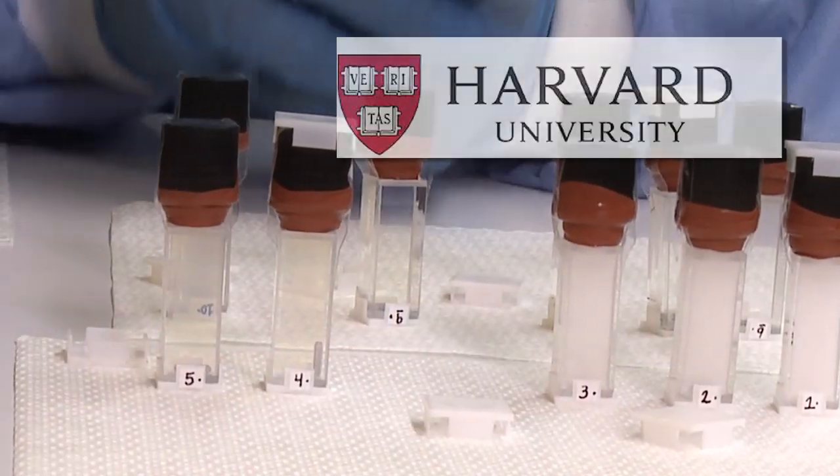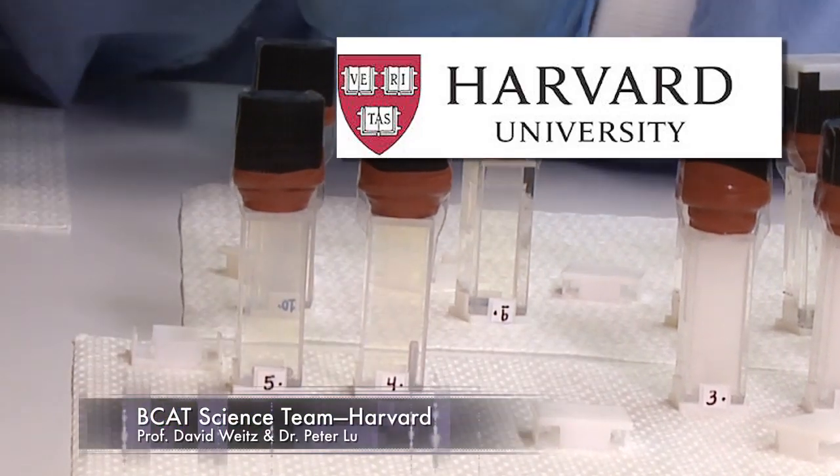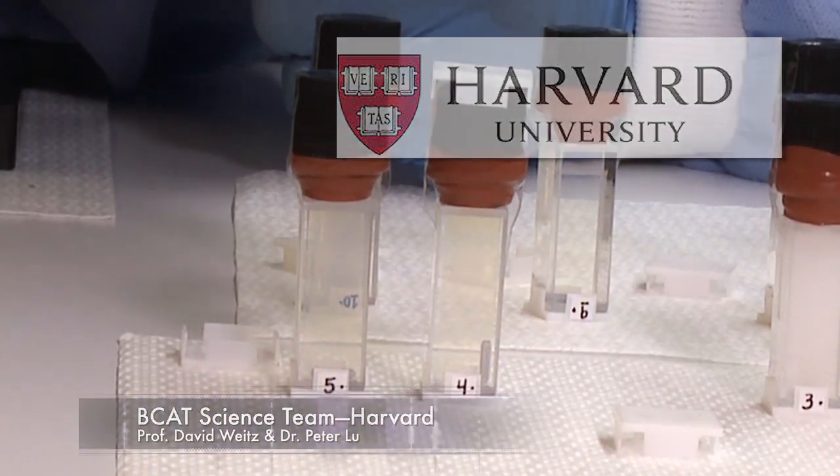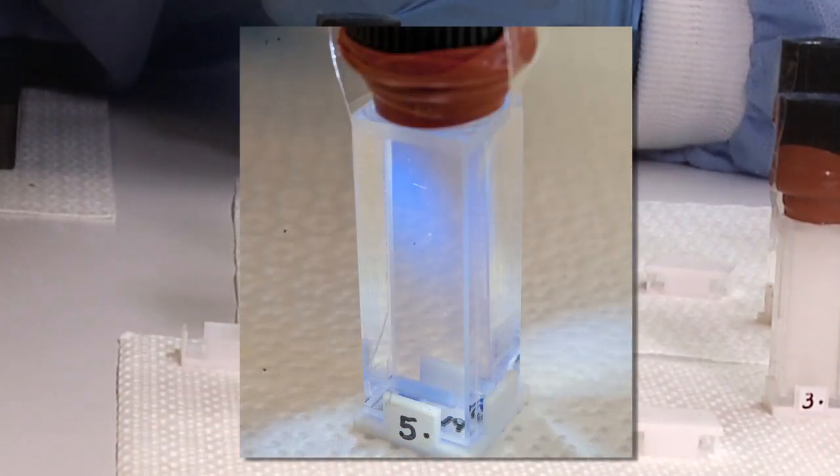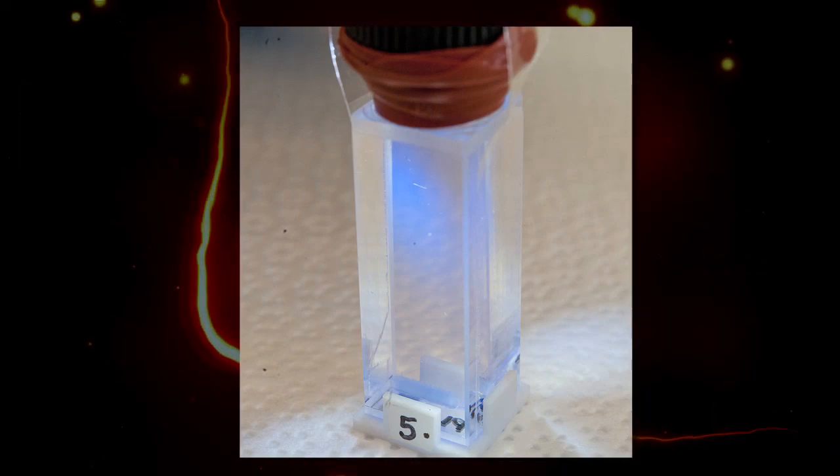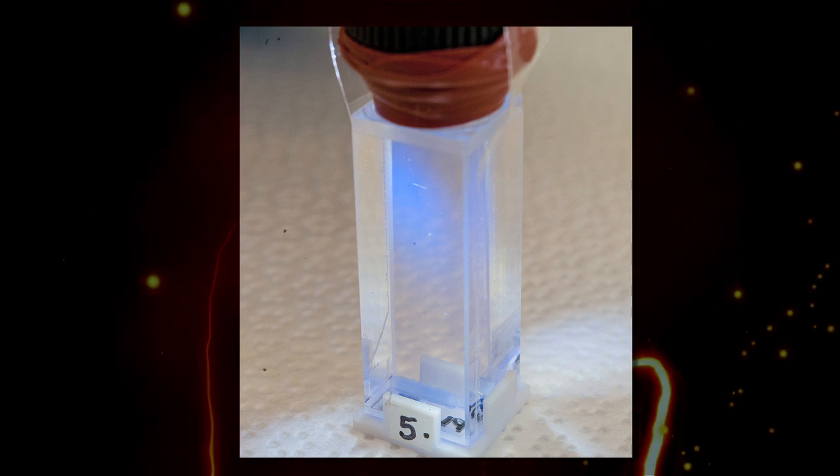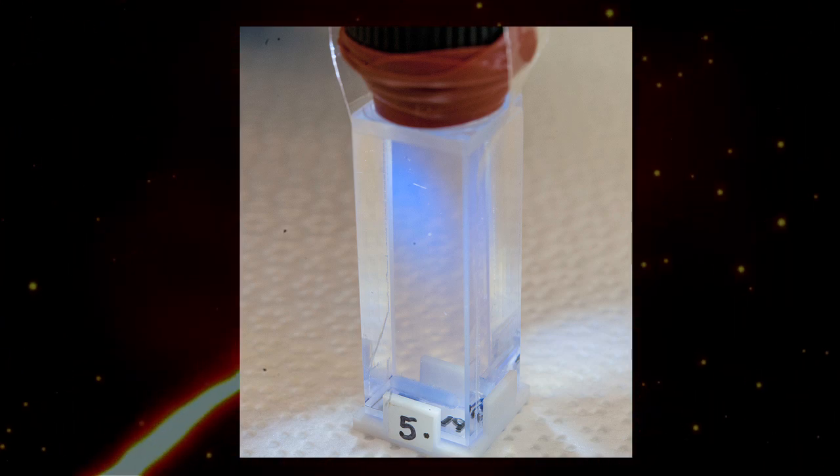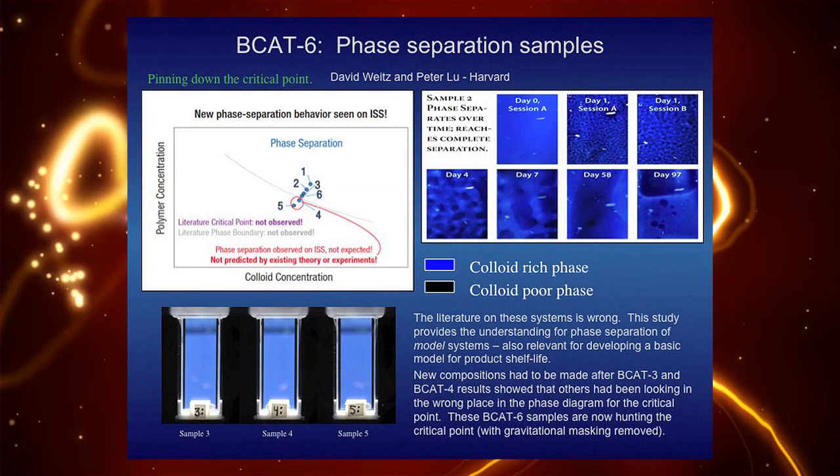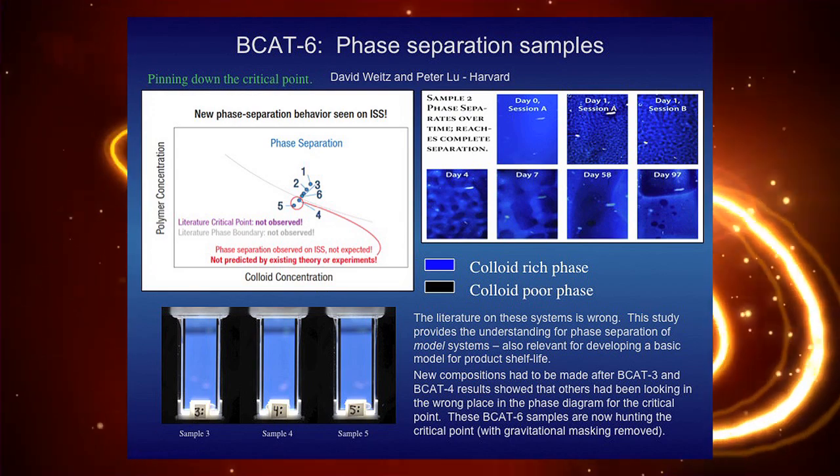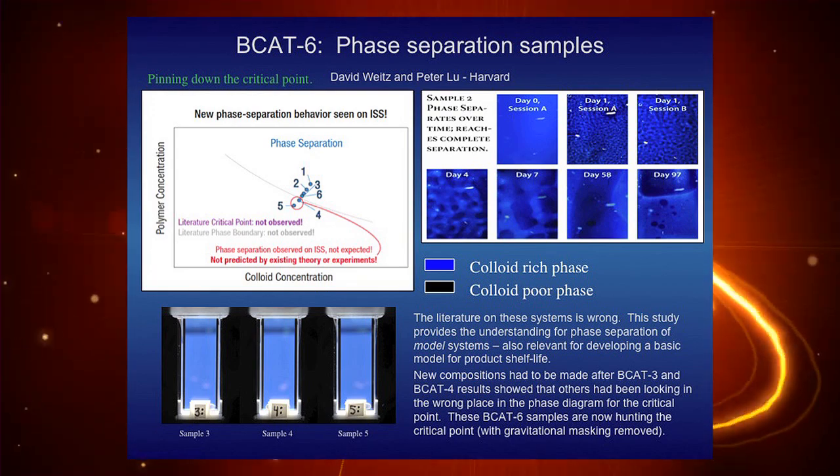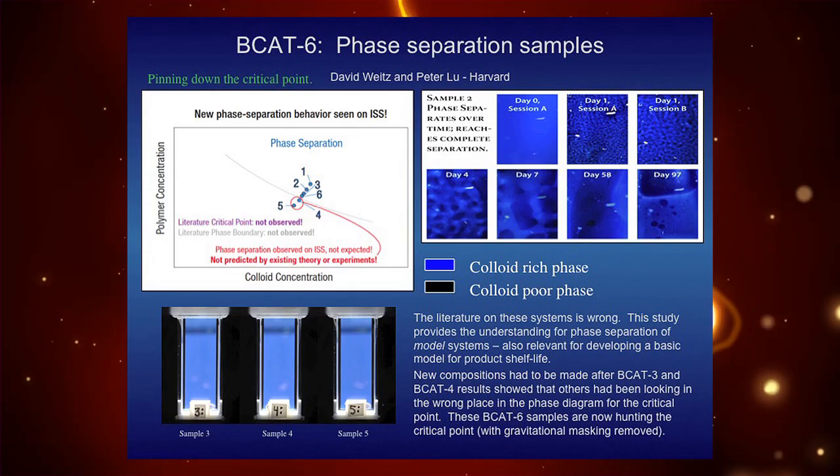The next two samples are from Harvard, and it's part of a series where they're trying to find out where a critical point is in a model system. You can have a fluid that's liquid or gas or something above that if you raise the temperature and pressure. This model system actually works at room temperature. It's much easier to study, and they're able to look at phase diagrams, and they're finding unexpected surprises, pleasant surprises.